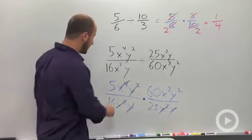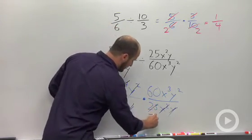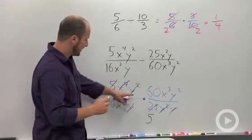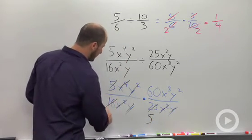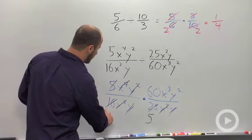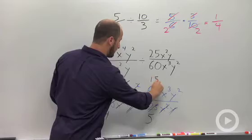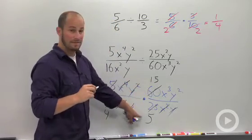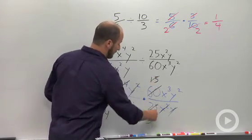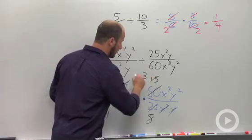5 and 25 cancel down to 5. And 16 and 60, both divisible by 4, so that becomes a 4, and that becomes a, I believe it's 15. 15 and 5 once again can cancel, leaving us with 3.